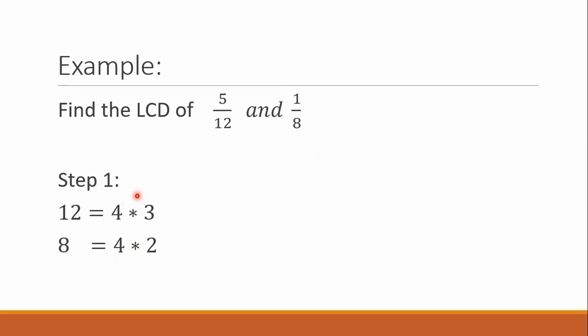However, we know that this 4 is not a prime number. So, we can still factor this number 4 into 2 and 2. So, the prime factors of 12 are 2 times 2 times 3, while the prime factors of 8 are 2 times 2 times 2.